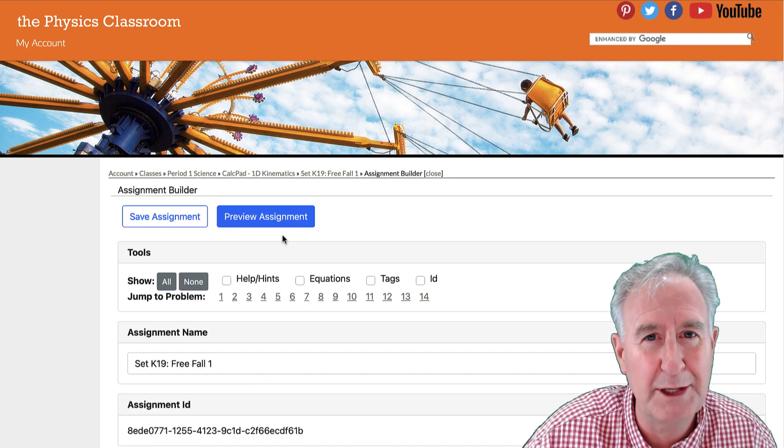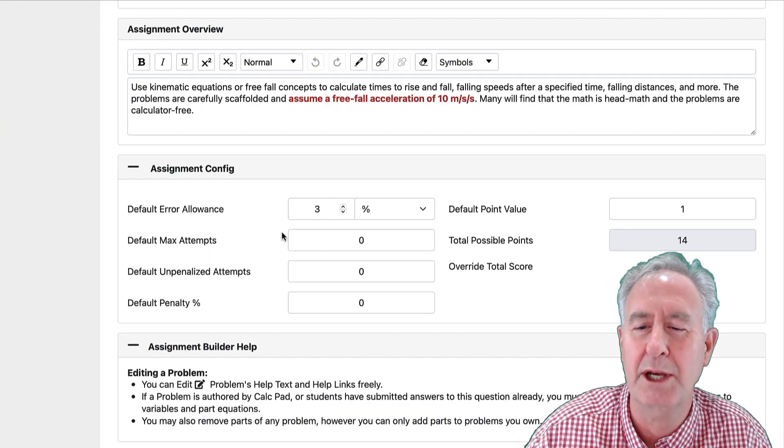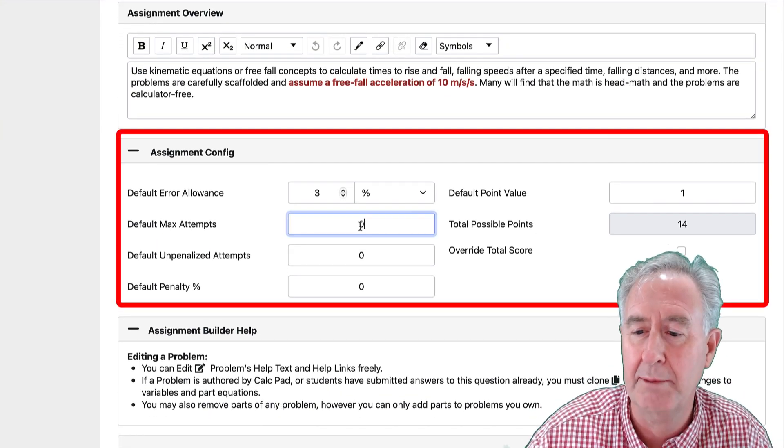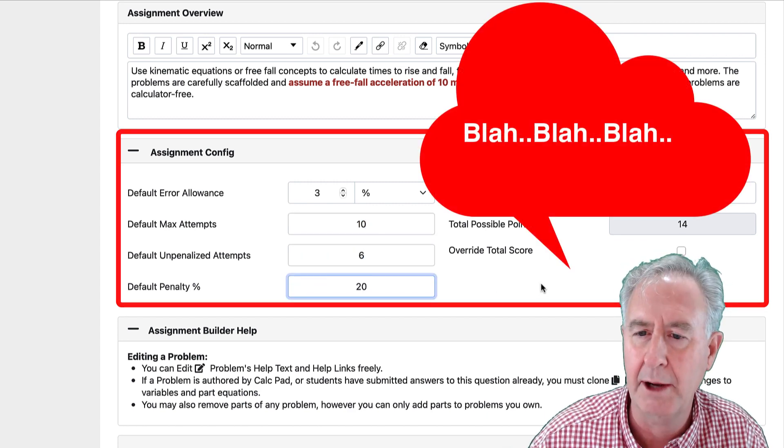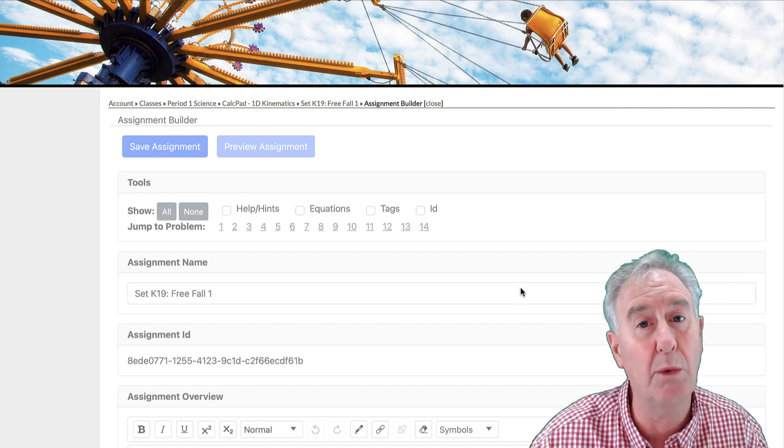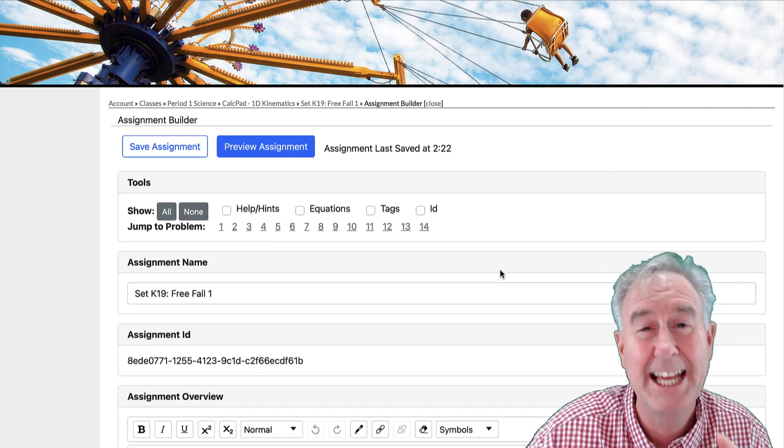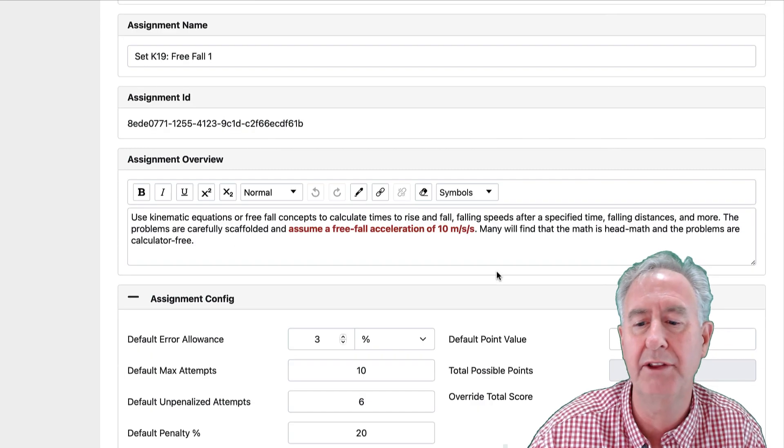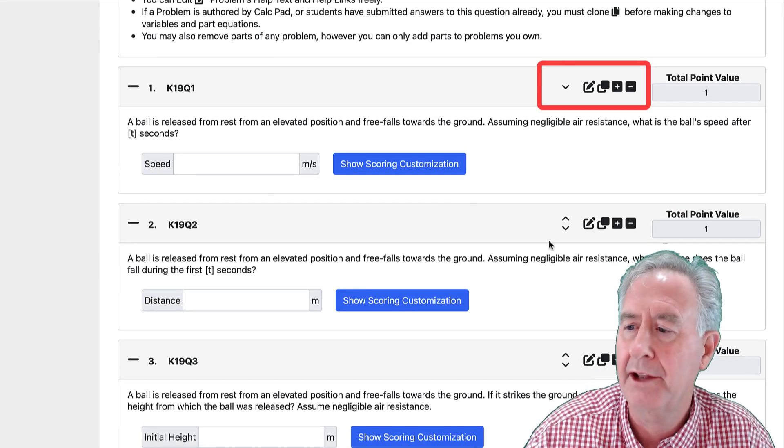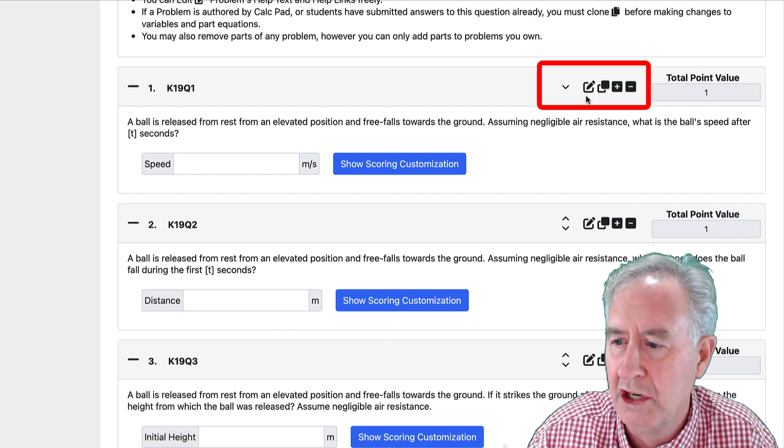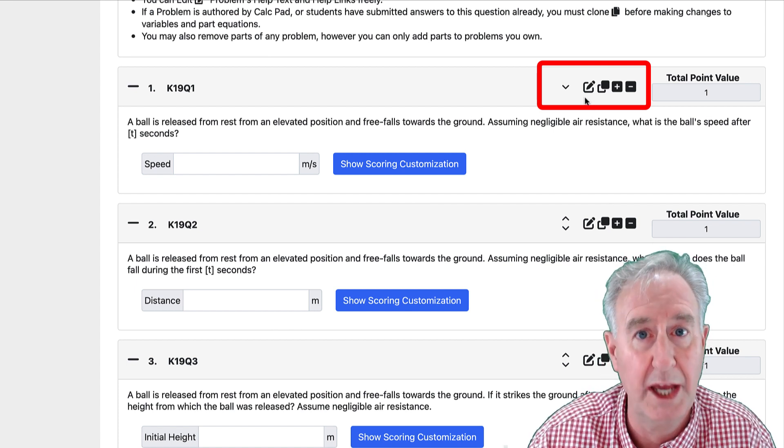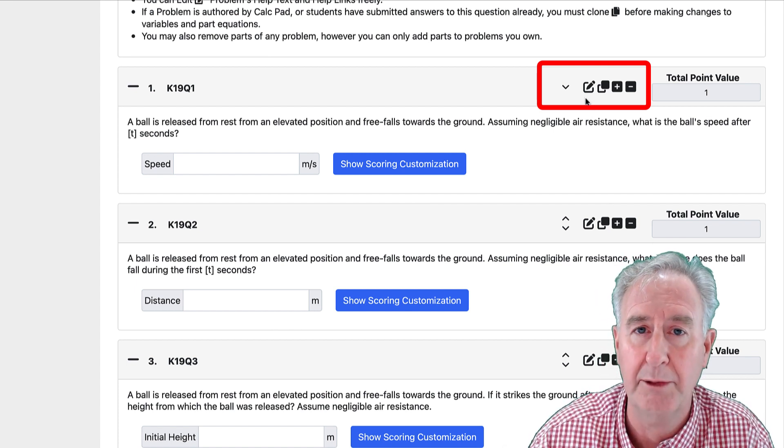Then I submit the assignment and I'm ready to launch it into the assignment builder. And in that other video, assigning a calc pad problem set, we discussed how to fill out the assignment configuration. Save the assignment. And now what I'm going to do, slow down a bit and talk about how to customize this. I'm going to scroll down to the first question. And you see these icons over here that are action icons. The pencil means edit. So you can actually edit a problem.